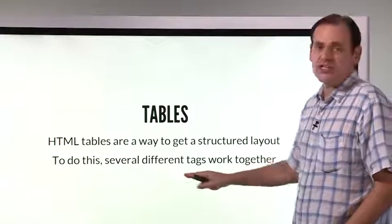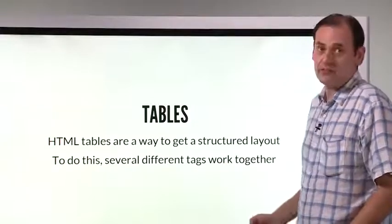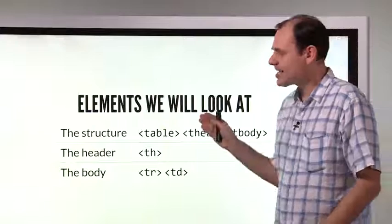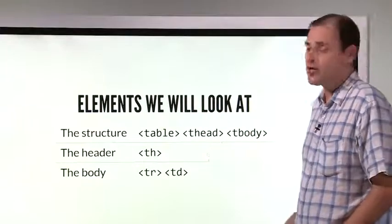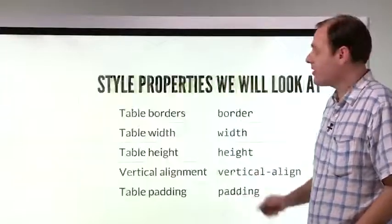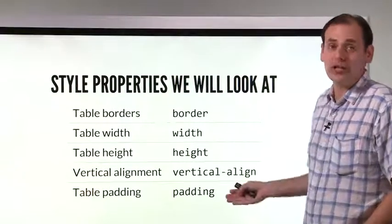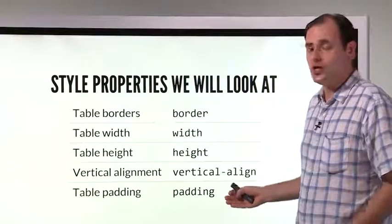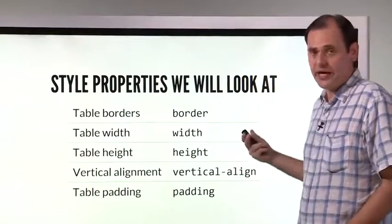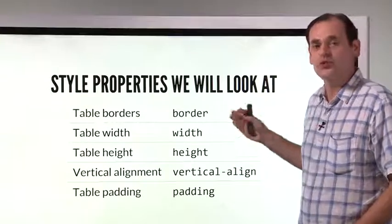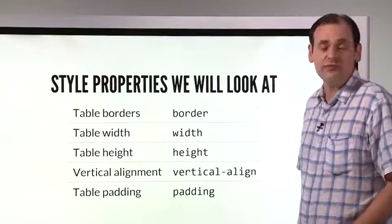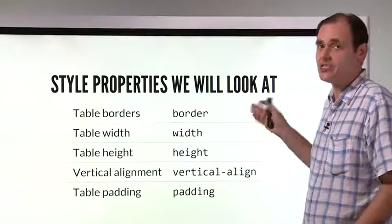To do this, several different HTML elements work together. These are the tags we're going to look at, the elements we're going to look at. Let's start looking at them one by one. We're going to work together with style properties. From the last video we know that style is the way that we handle different visual elements, and it's the same thing with tables.